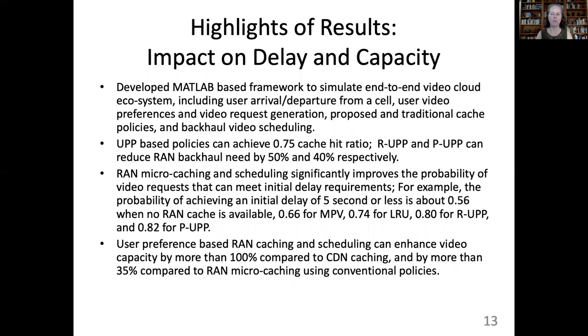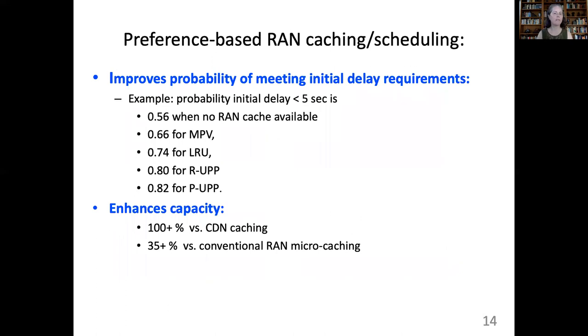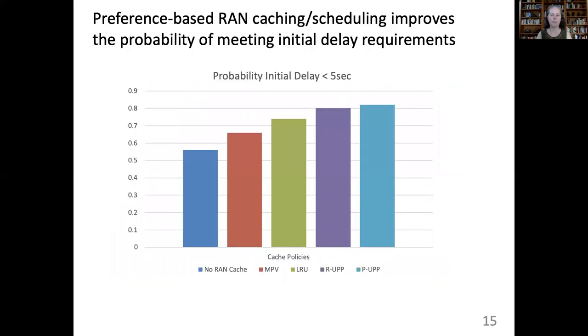As a last example, you might recall this wall of text slide from the last lecture. They've got a bunch of results numbers down there, but they are kind of buried. So last time, we did some redesigning like this, and you can see that it's easier to compare the numbers when they are lined up like this. But the assertion evidence approach would call for additional changes. The title of the slide is still a topic, not a message. So we can change the title to give an assertion. And then we replace the list of numbers with a visual like this. Now the title says, preference-based RAND caching and scheduling improves the probability of meeting initial delay requirements. And the list of numbers has been turned into a bar chart. So these examples give you the basic idea of the assertion evidence approach to slide design.